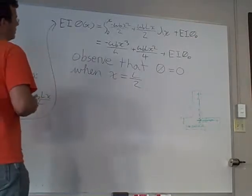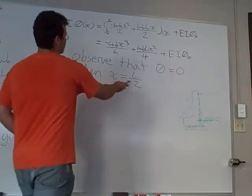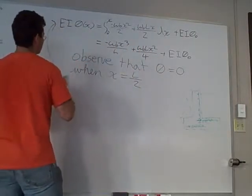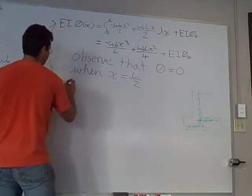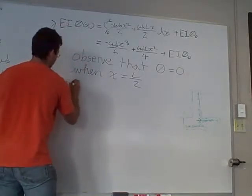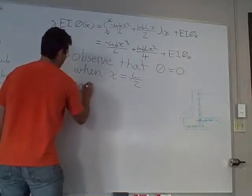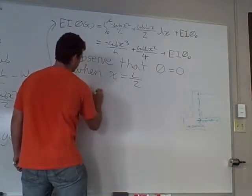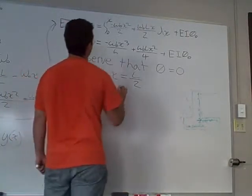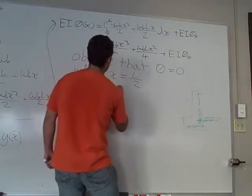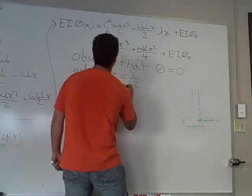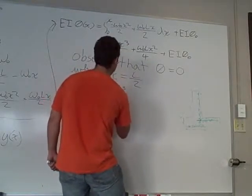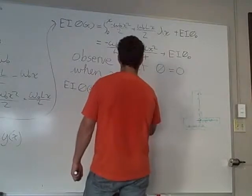And so once we do that, we can substitute in L over two for X, wherever we see X. So basically our equation is going to be EI theta of L over two is going to equal negative WL to the third over six times one over eight.